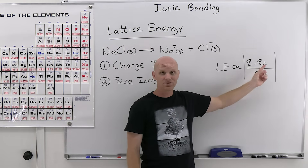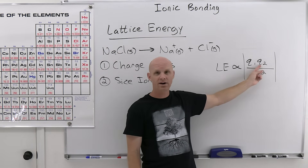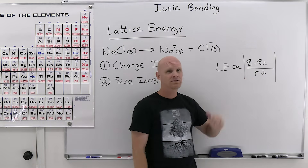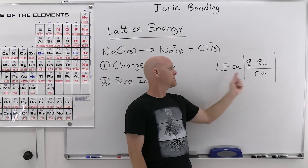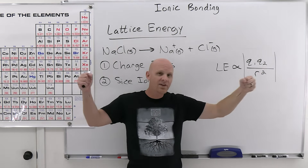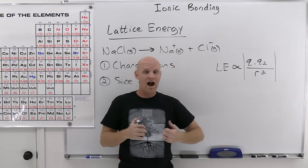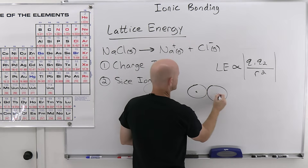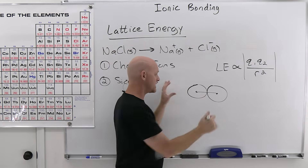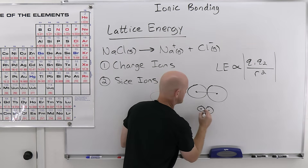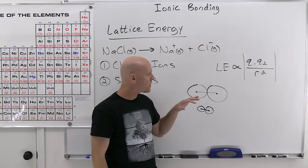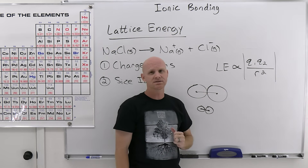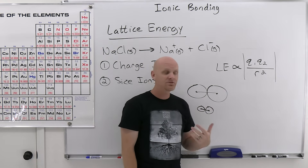The same applies to anions: minus-two leads to stronger lattice energies than minus-one charged anions. The greater the magnitude of the cations and anions, the greater the lattice energy. The ionic bond is also stronger when ions get closer together, which happens with smaller ions. The length of the ionic bond runs nucleus to nucleus, and that distance gets shorter with smaller ions. Lattice energy is inversely proportional to that distance of separation squared.